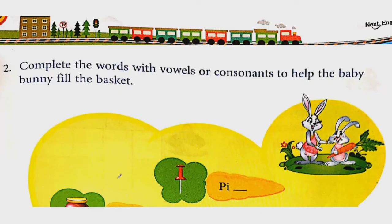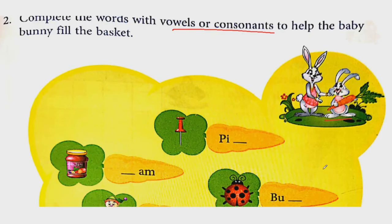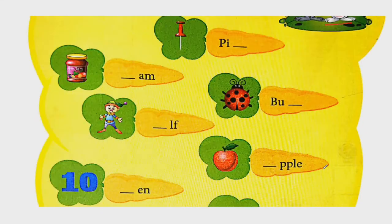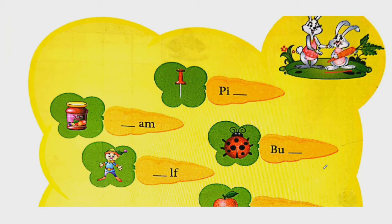Let's move. Complete the words with vowels or consonant to help the baby bunny fill the basket. Here you can see baby bunny. You will need to fill the basket with pictures and words. So first picture, what is this picture about? This picture is of pin. P-I-N is a pin, and it's consonant. Next, look, there's a bottle and it's written J-A-M. So the bottle is of jam. So you will write J-A-M. This is consonant.